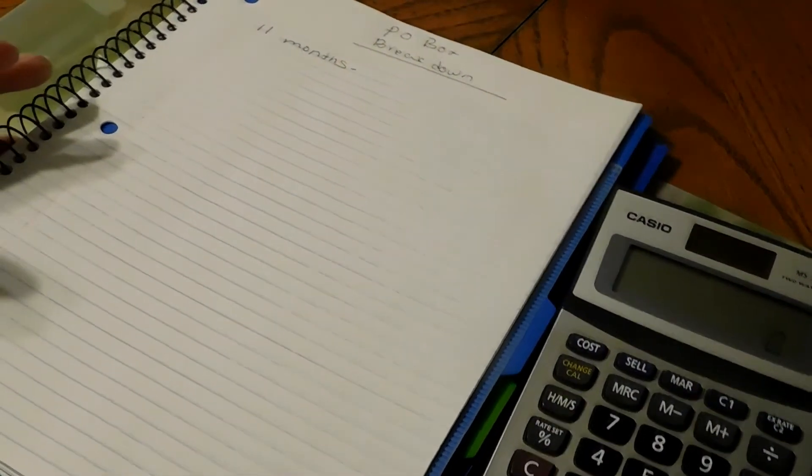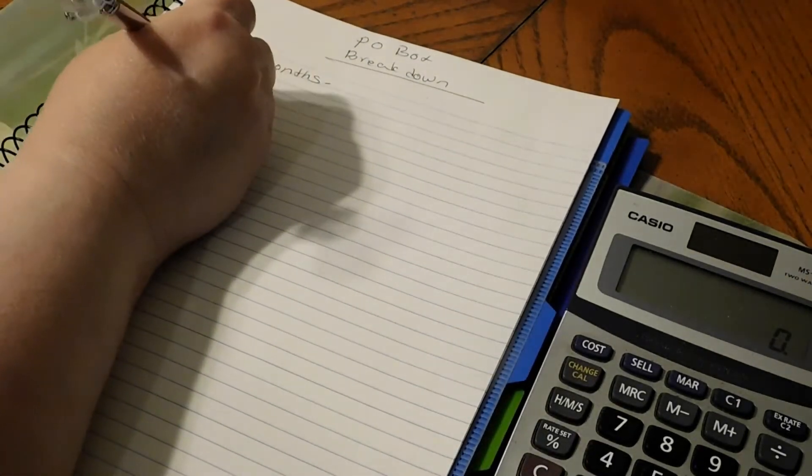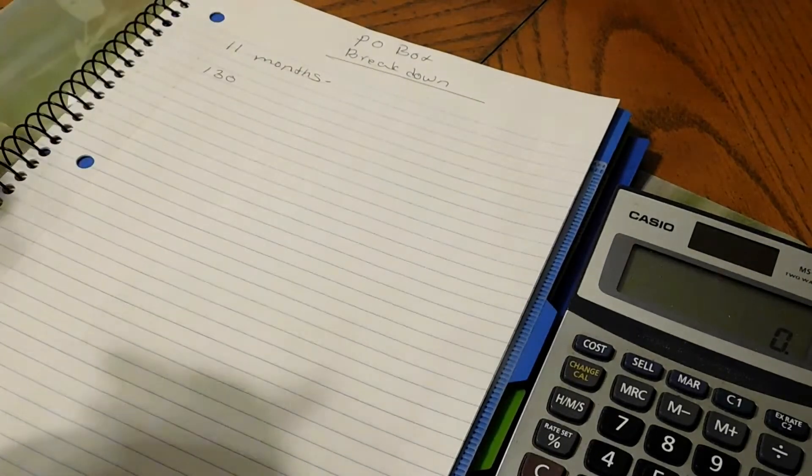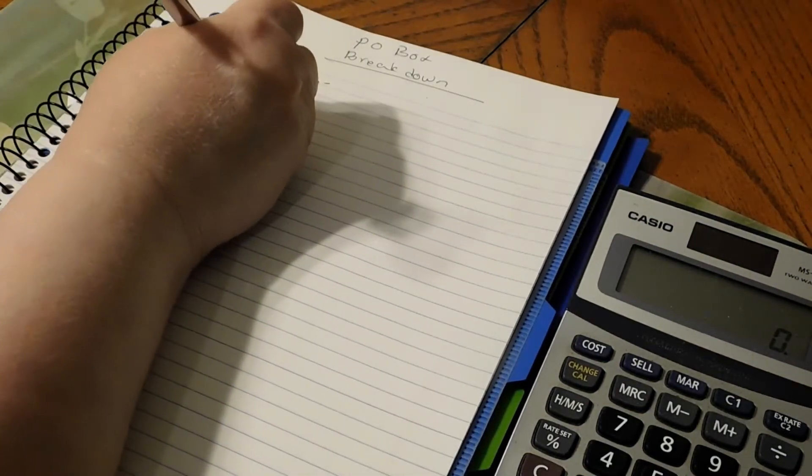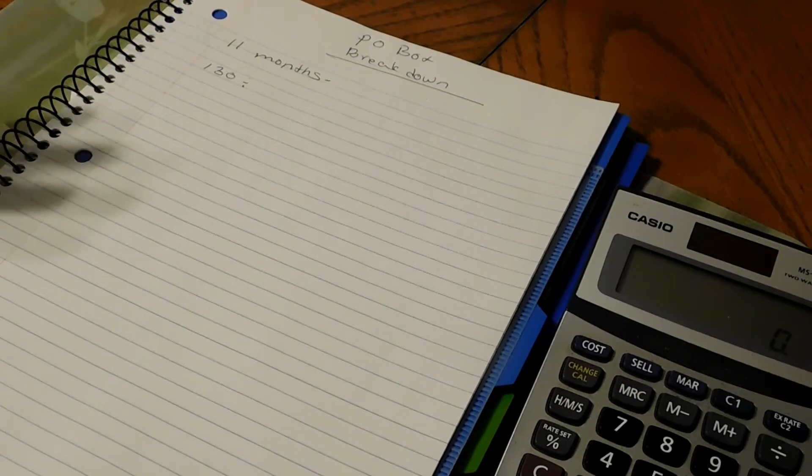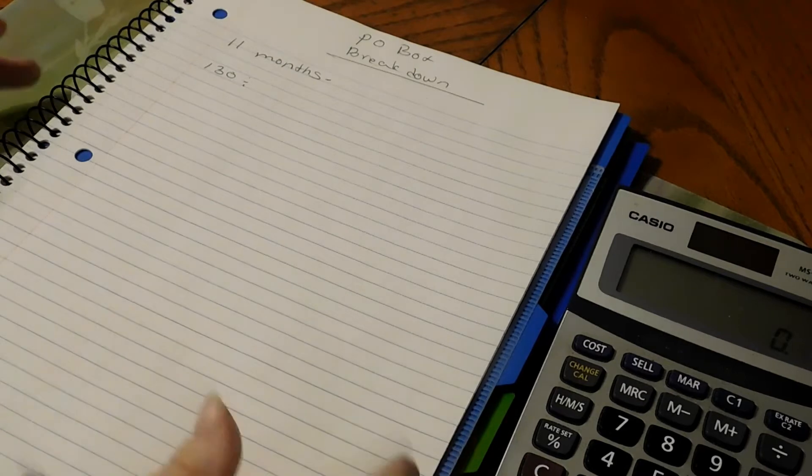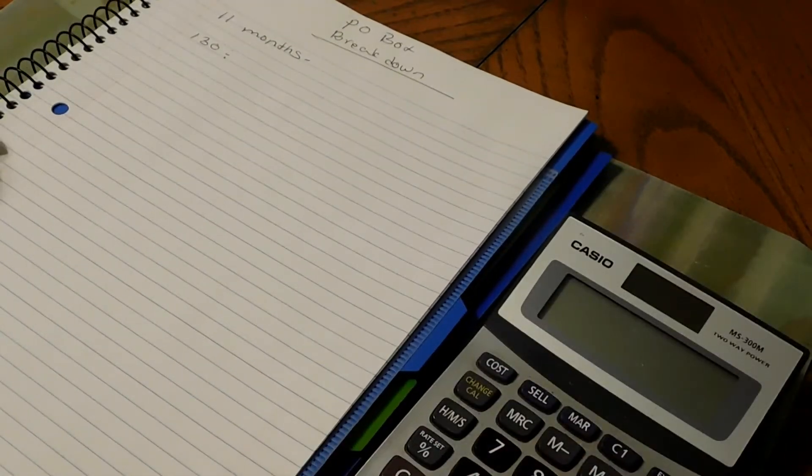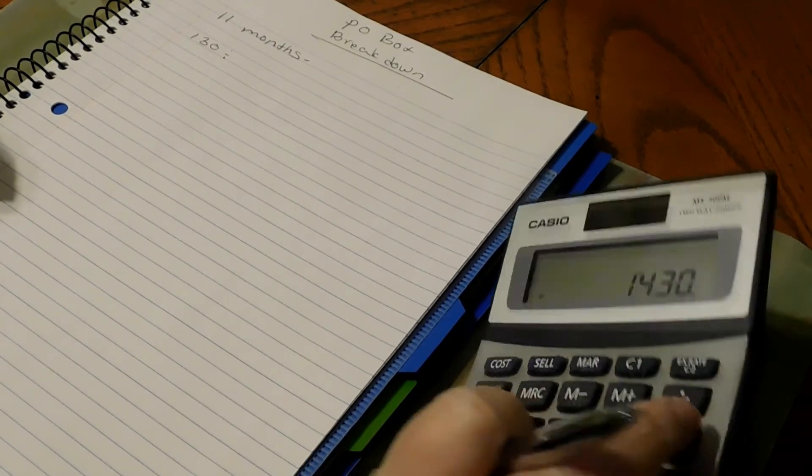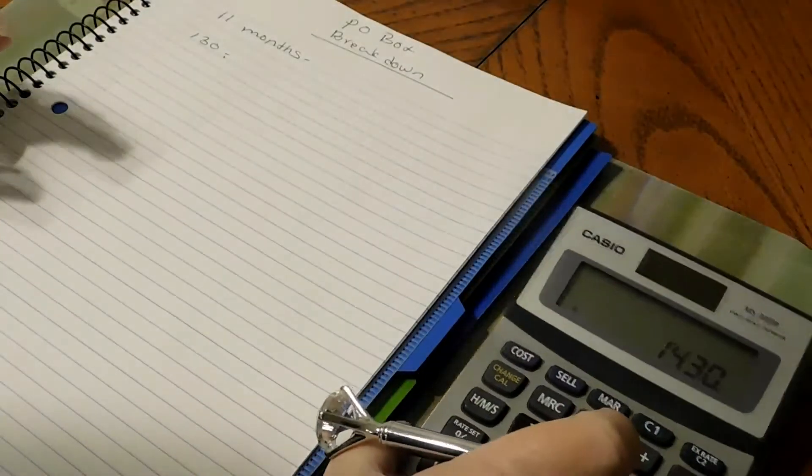Now I'm taking out $130. Like I said, I'm going to take out that little extra because just in case the P.O. Box does increase this year, I'll have that little bit of extra money in there to take care of that. $130 and we're going to divide that by 11 months, which comes out to $14.30.